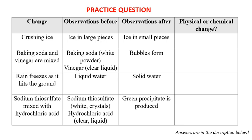Third example: rain freezes and hits the ground. Before, it was liquid water; after, it was solid water. The last example: sodium thiosulfate is mixed with hydrochloric acid. Before, sodium thiosulfate was white crystals and hydrochloric acid was a clear liquid. After, a green precipitate is being produced. The answers for these questions are in the description below.